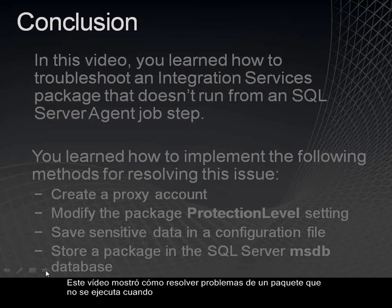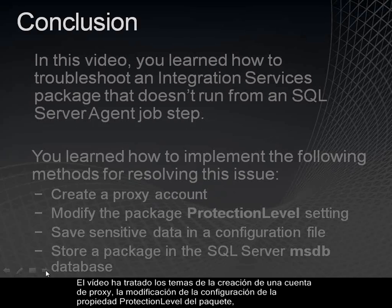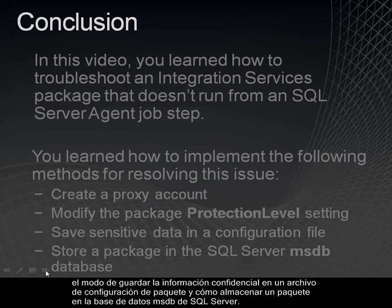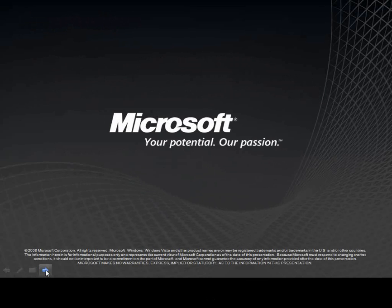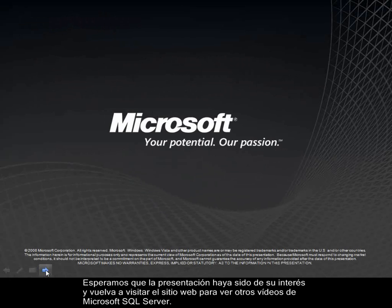This video demonstrated how to resolve issues with a package that doesn't run when called from a SQL Server Agent job step. The video covered creating a proxy account, modifying the package protection level property setting, saving sensitive data in a package configuration file, and storing a package in the SQL Server MSDB database. Thank you for watching this video. We hope that you have found this of value and will return to the website to view other Microsoft SQL Server videos.